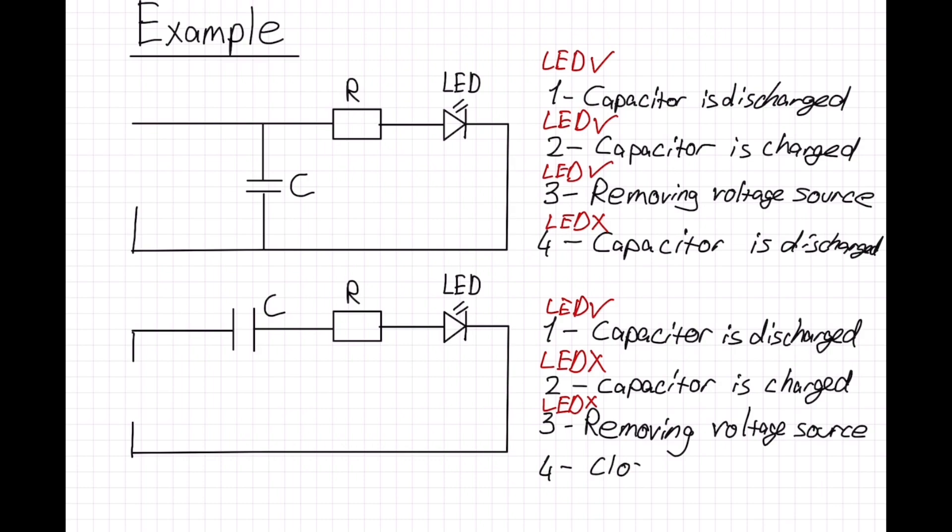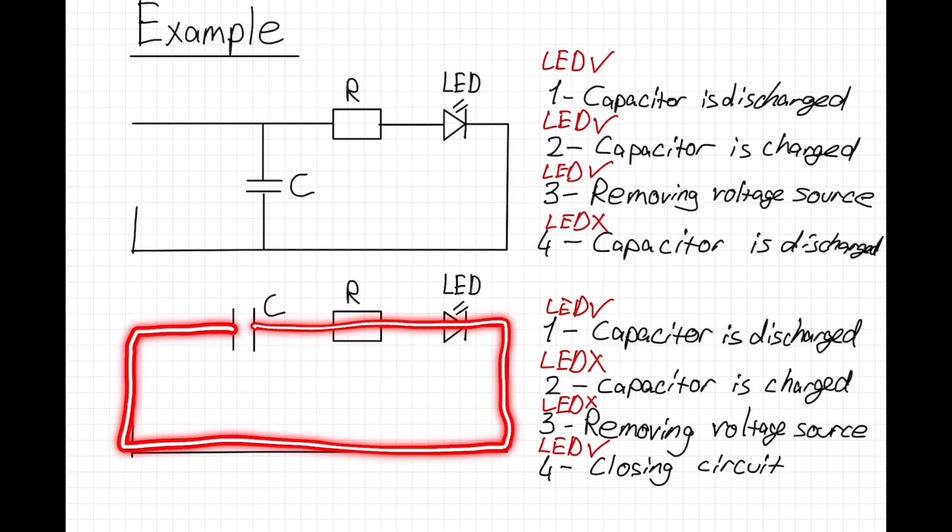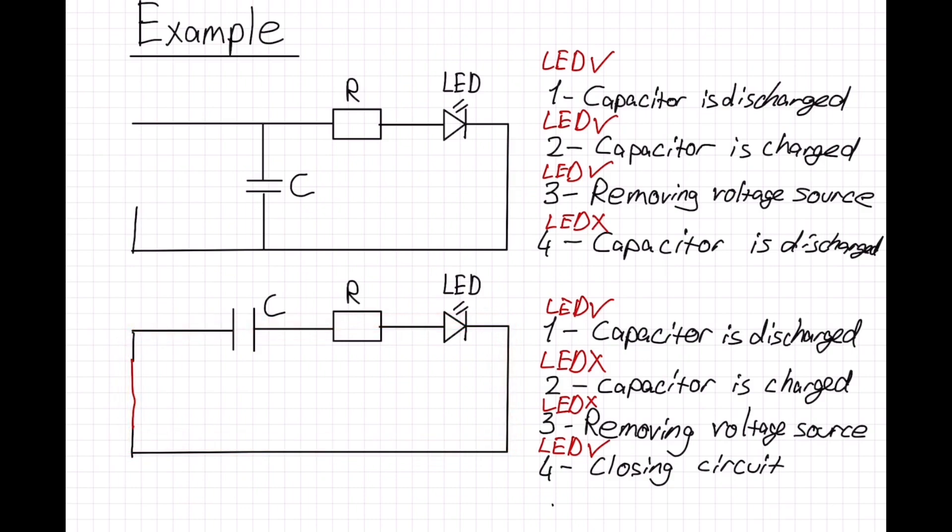At the fourth stage, we are closing our circuit with a wire and our LED turns on. As you see, I close the circuit and because of the energy storage in our capacitor, LED turns on.